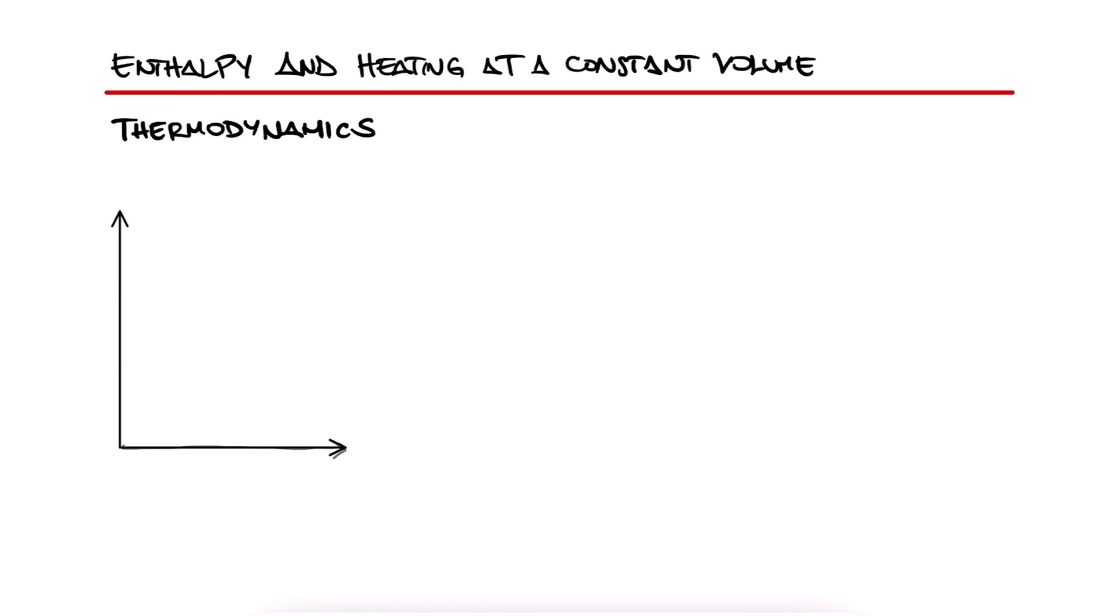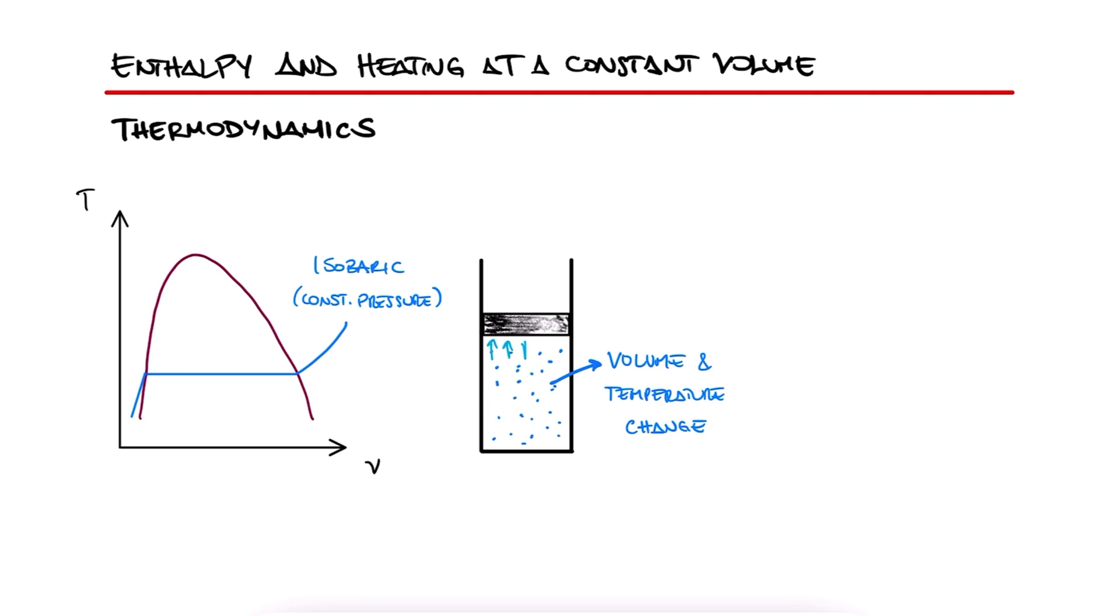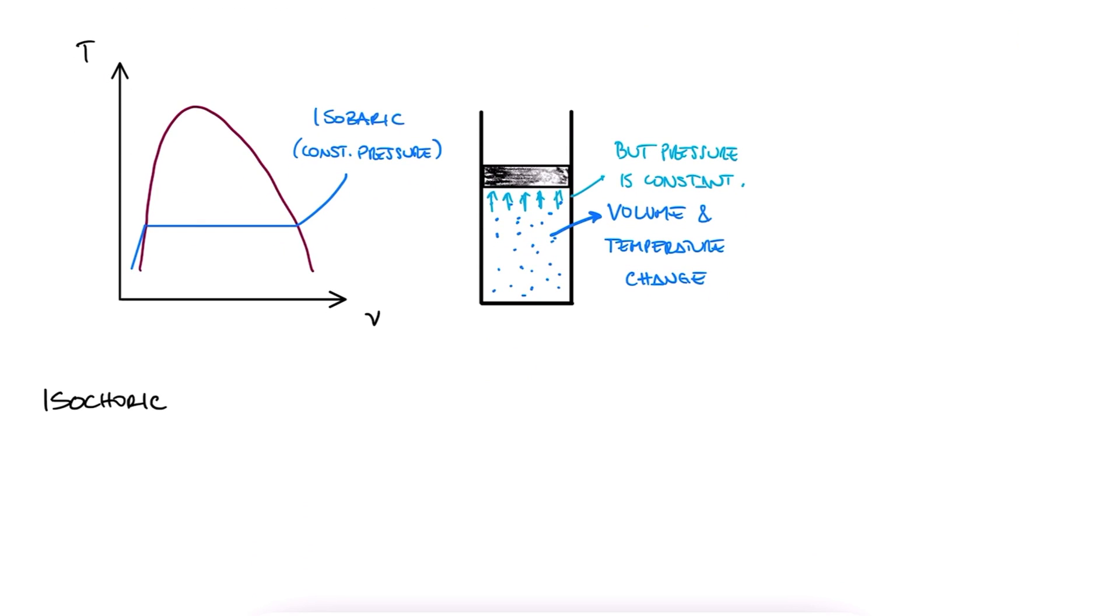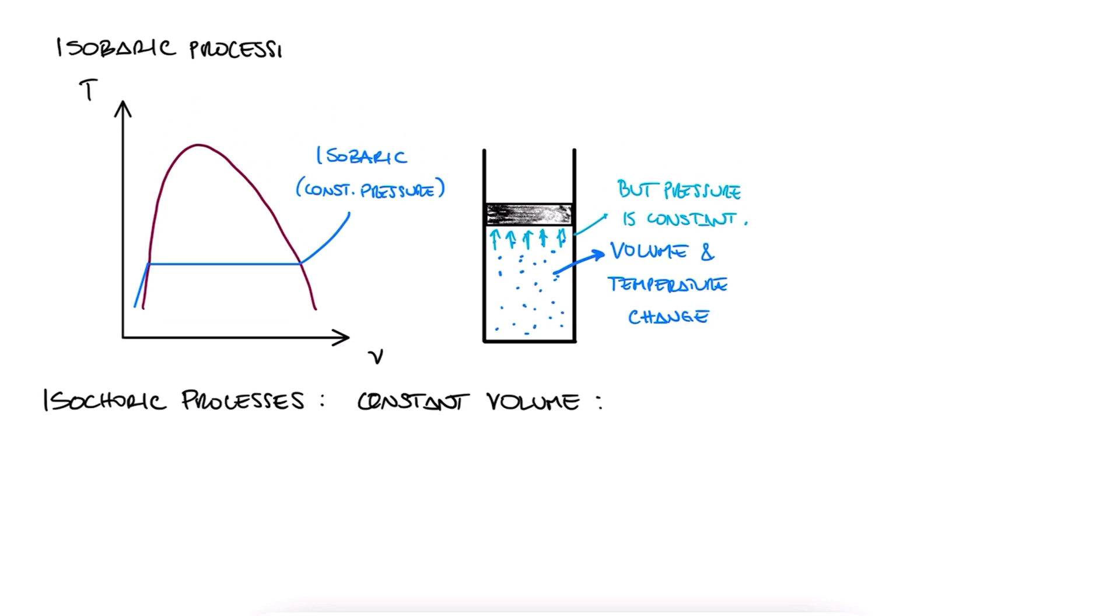By covering the basics of TV diagrams in our previous lecture videos, we mostly covered the case where piston-cylinder systems maintained a constant pressure by allowing the fluid inside them to change both temperature and volume. Today we'll focus on heating at a constant volume, and introduce the concepts of enthalpy and internal energy. These two are related to and commonly used with constant pressure and constant volume processes.